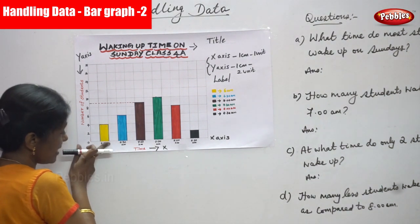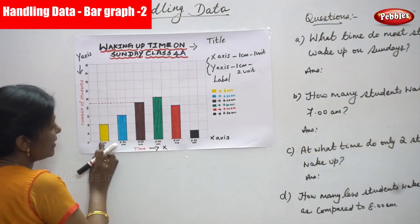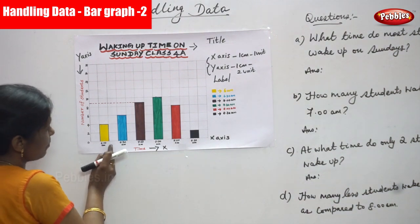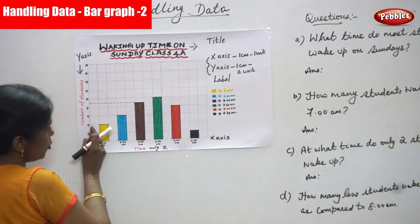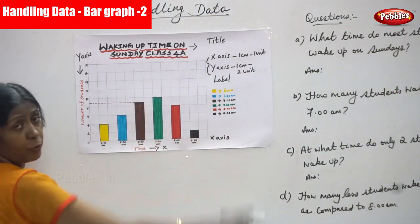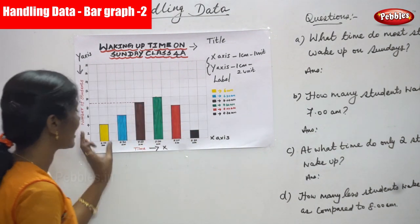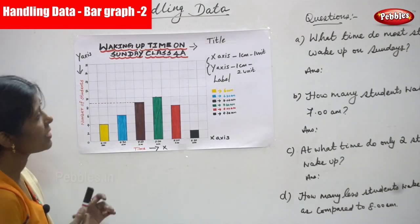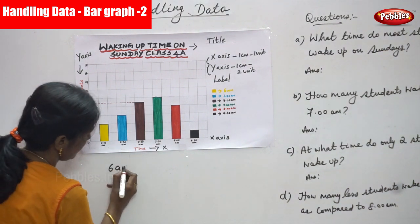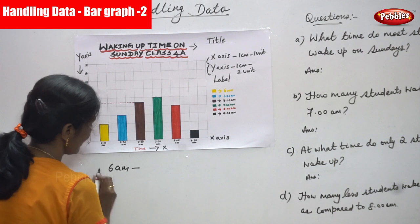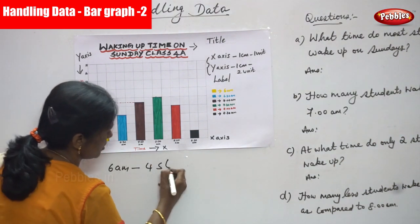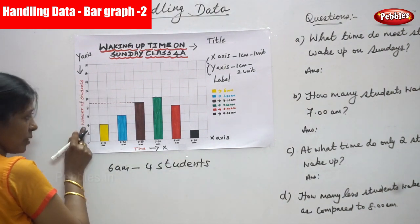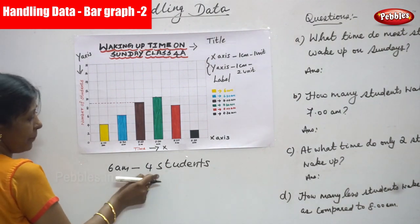This is the vertical graph — we start from the x-axis to the y-axis. I shaded it in yellow color. So the yellow color vertical bar represents 6 a.m. On Sunday at 6 a.m., 4 students from class 4A wake up. That is the clear information from the vertical bar graph — 6 a.m., 4 students wake up.